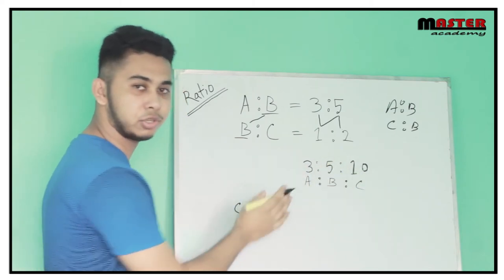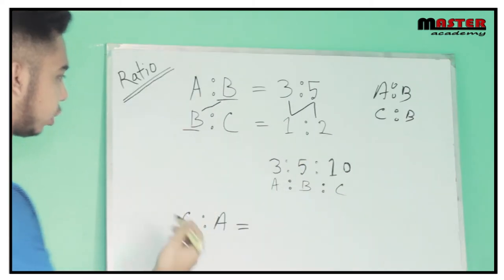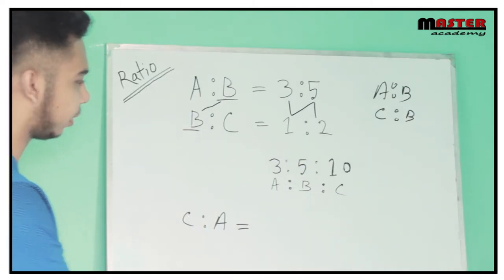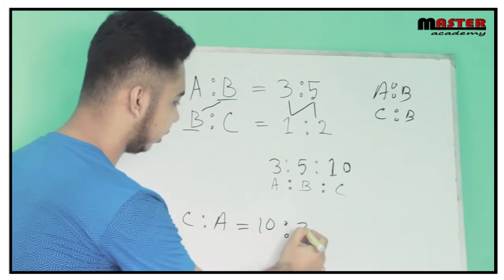A is to B, B is to C is equal now. So the answer is, C is to A, 10 is to 3.